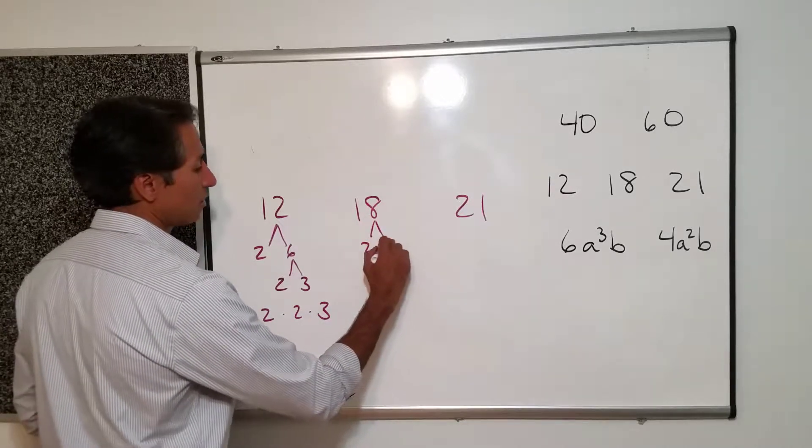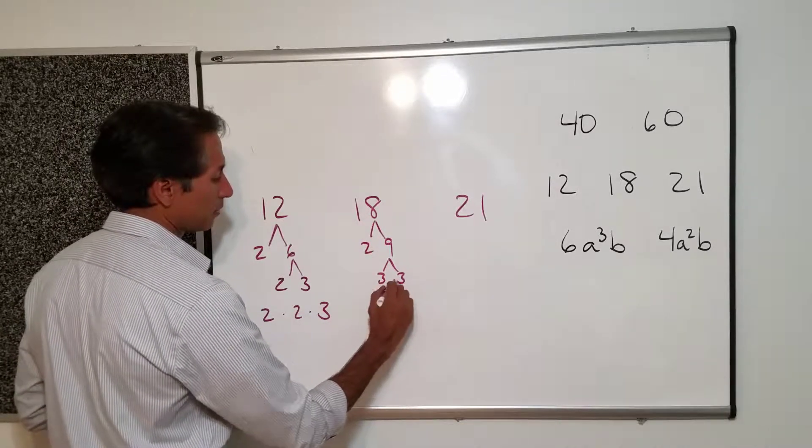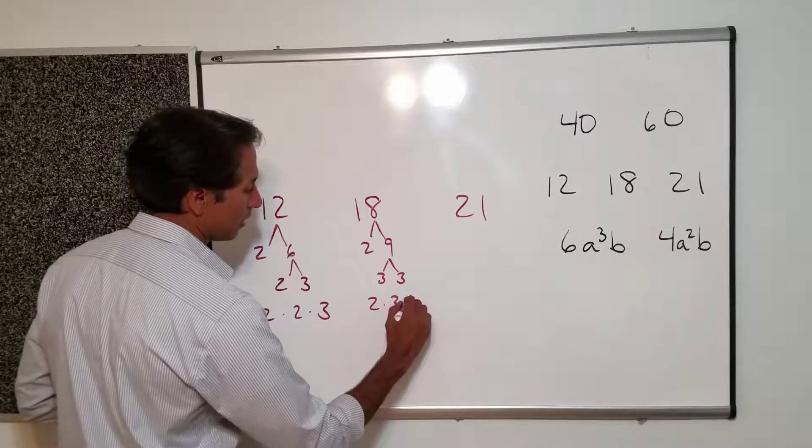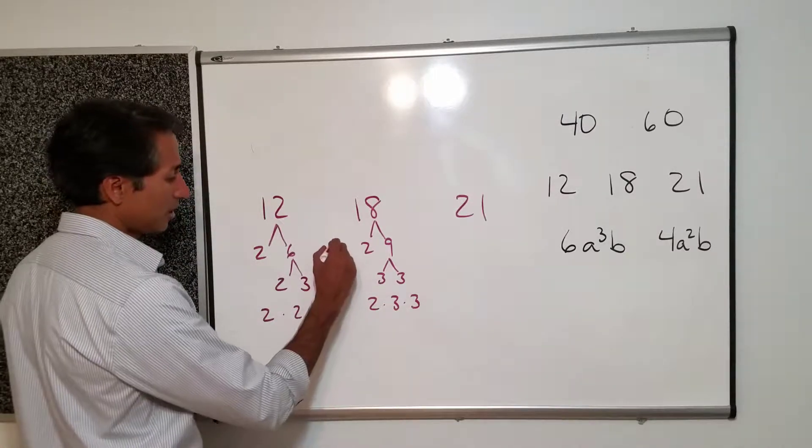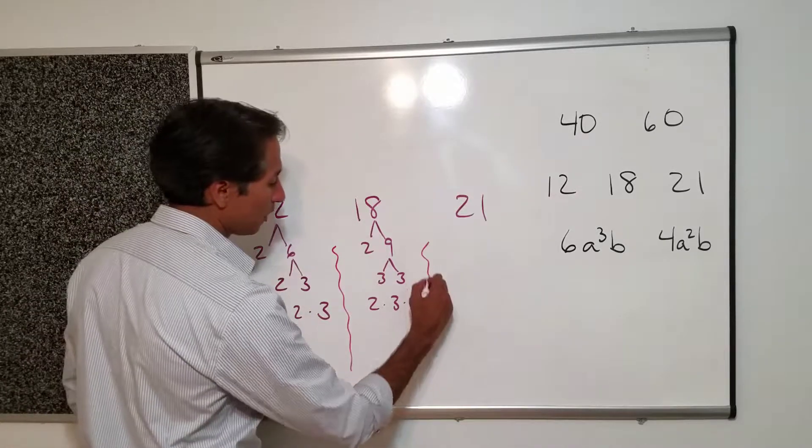This guy 18. Two times nine. Three times three. So I have a two times a three times a three. If it helps you when you're doing these. To put a barrier in between. You can.